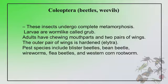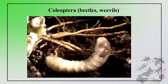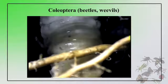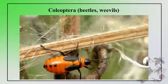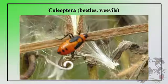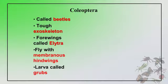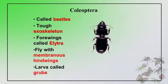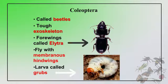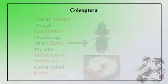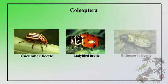Here is the order Coleoptera. These insects undergo complete metamorphosis; larvae are worm-like called grubs, and adults have chewing mouth parts and two pairs of wings. The outer pair of wings is hardened and called Elytra. Pest species include blister beetles, bane beetles, and western corn beetles. They are commonly called beetles, have hard exoskeleton, four wings called Elytra, fly with membranous hind wings, and larvae called grubs. Common Coleopteran examples include cucumber beetle, ladybird beetle, and rhinoceros beetle.